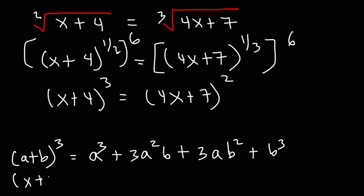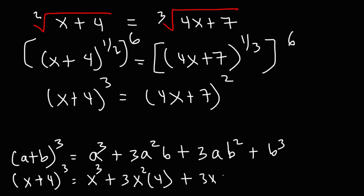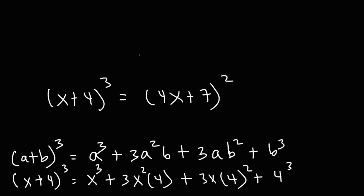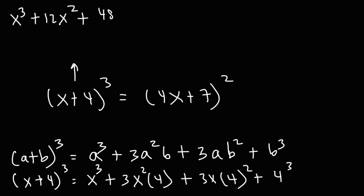Let's say that a is x and b is 4. So a cubed is going to be x cubed, plus 3 times x squared times 4, plus 3x times 4 squared, then plus 4 to the 3rd power. Simplifying: x plus 4 raised to the 3rd power equals x cubed plus 12x squared — since 3 times 4 is 12 — plus 48x, since 4 squared is 16 times 3x gives 48x, and then plus 64, since 4 to the 3rd is 64.